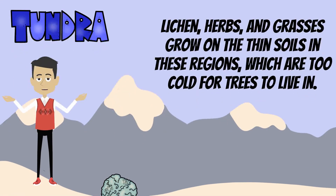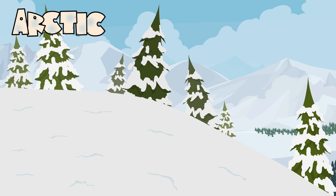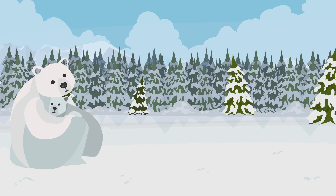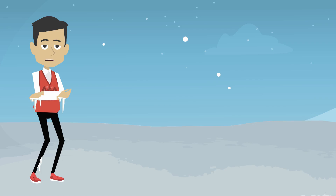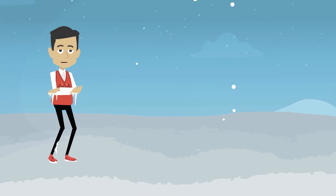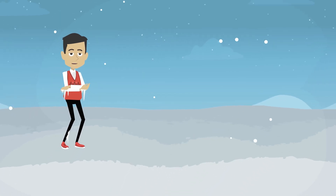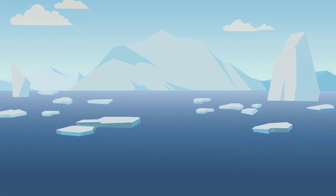Common plants include lichens, shrubs, and grassy plants. Common animals include arctic foxes, polar bears, caribou, wolves, and migratory birds.